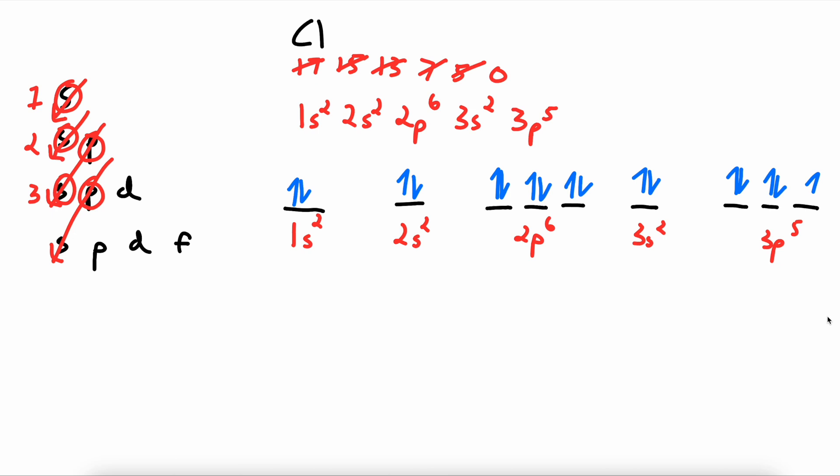Good job. Now let's draw the atom. We start by writing our elemental symbol. Because we go all the way to the third energy level, we need to draw 3 bands for this chlorine.